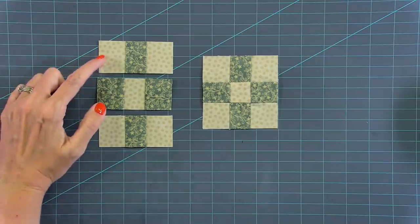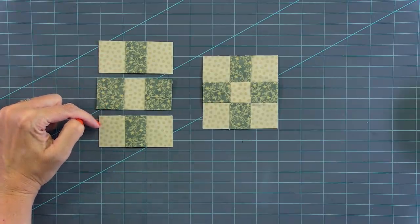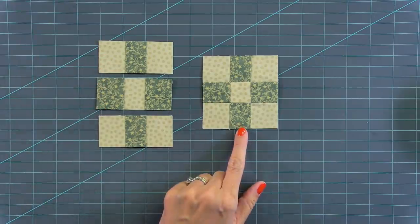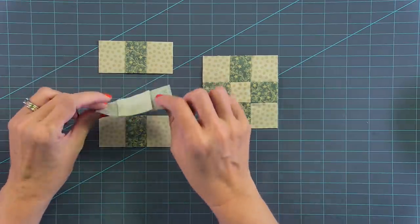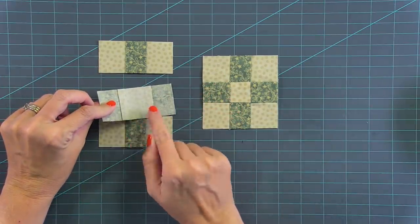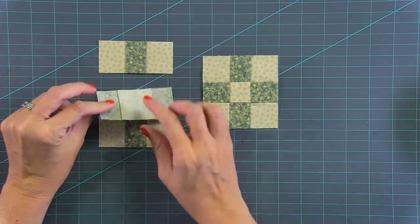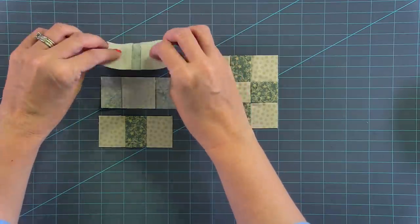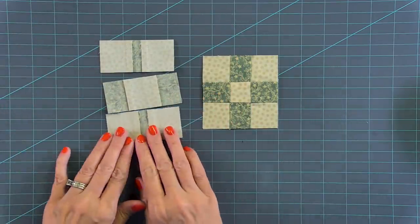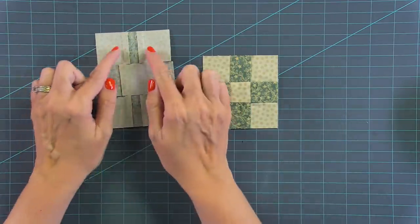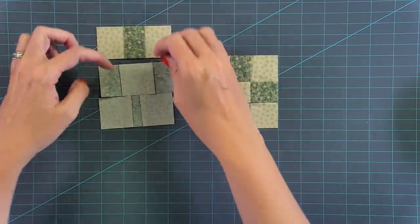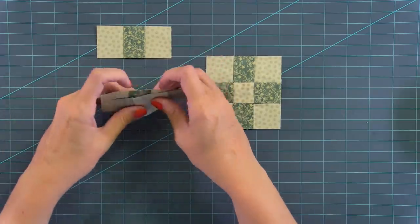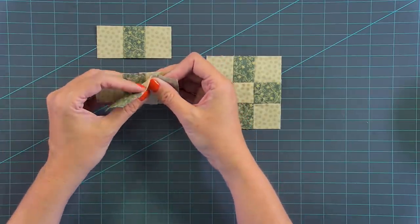Now we're going to turn our one and a half inch rectangles into a nine patch. Now, what I forgot to tell you is on your print strip set, you want to press that towards the green. And if you look at the back, you will see that your seams are going to nest because the seams go different directions.